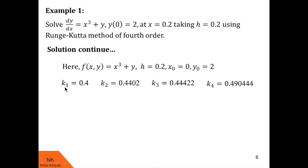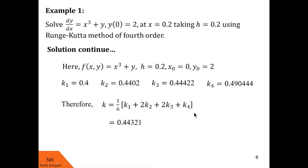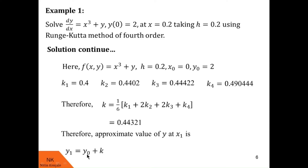Now we substitute into the formula k = (1/6)(k₁ + 2k₂ + 2k₃ + k₄) and find k = 0.44321. We then substitute this into y₁ = y₀ + k, where y₀ = 2, giving 2 + 0.44321. Therefore y₁ = 2.44321. This is the required value of the solution at x = 0.2.